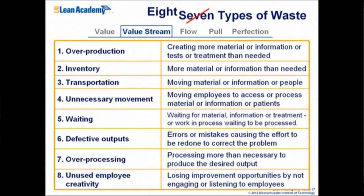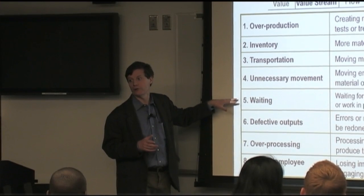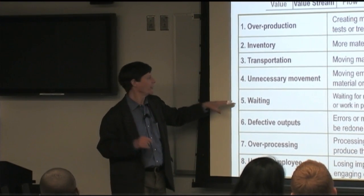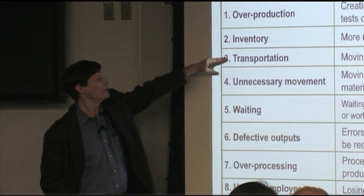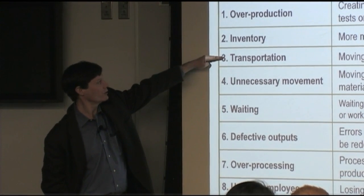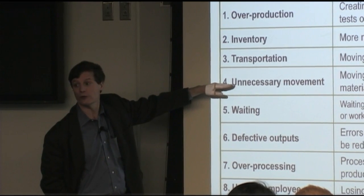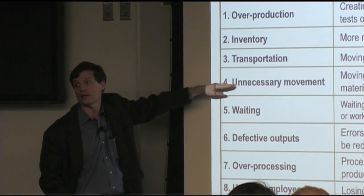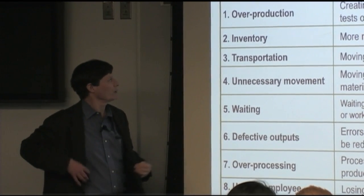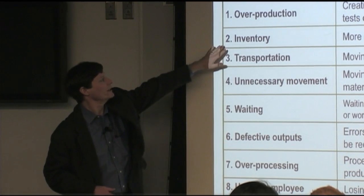Things like waiting — that's pretty fundamental: stuff that's not moving, people that aren't working. Moving stuff around — moving employees or moving material or information. Movement of value-added stuff, and movement of the resources and employees needed to do the work — either of those is a waste. If your stuff is moving around, it's not being worked on. That costs people's time, it costs money to move around inventory.